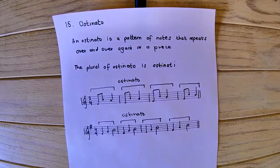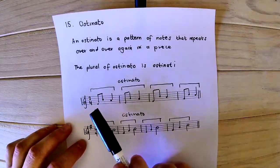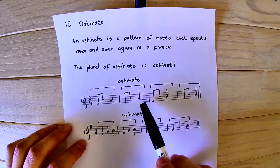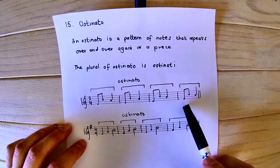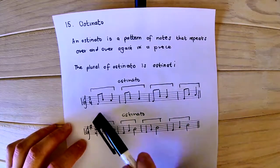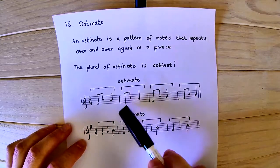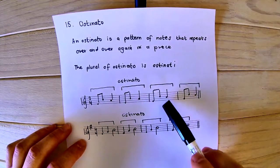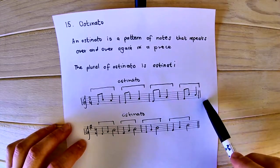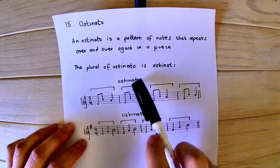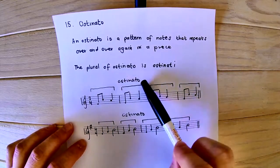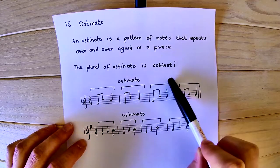An ostinato — so for example, we have this rhythm: takteta, takteta, takteta, takteta. The ostinato will be there because that's the repeating rhythm.